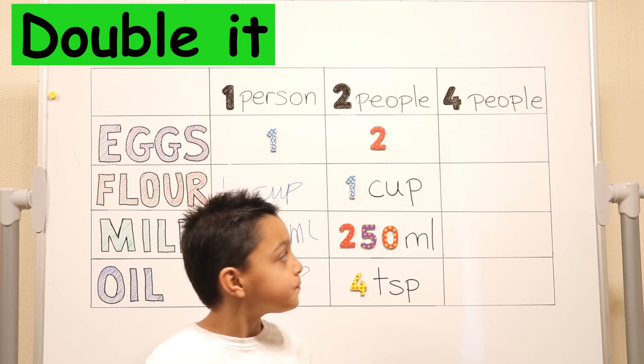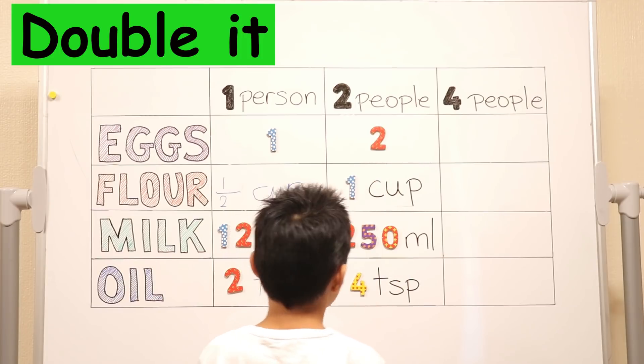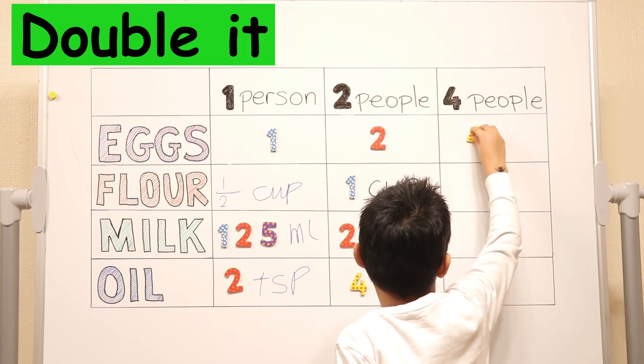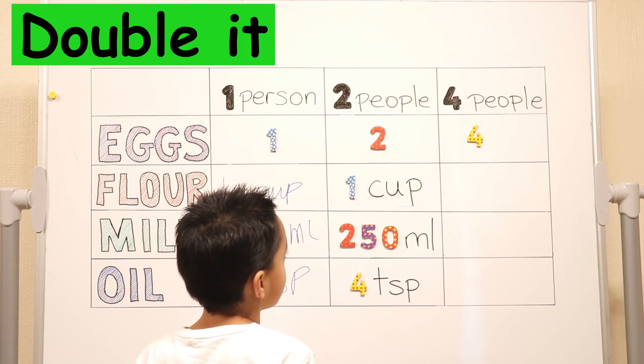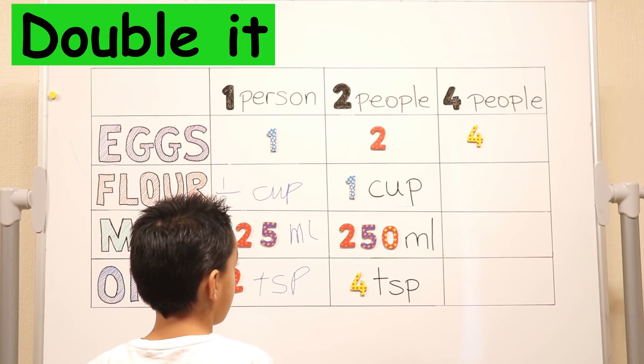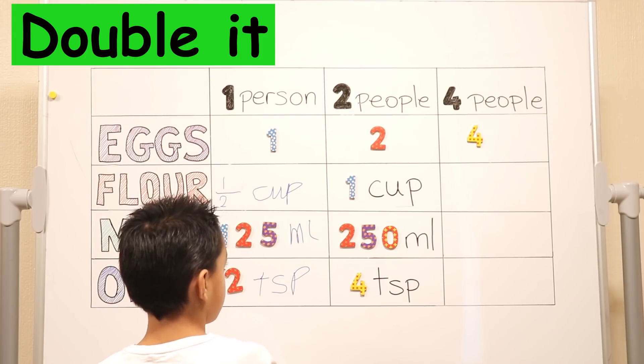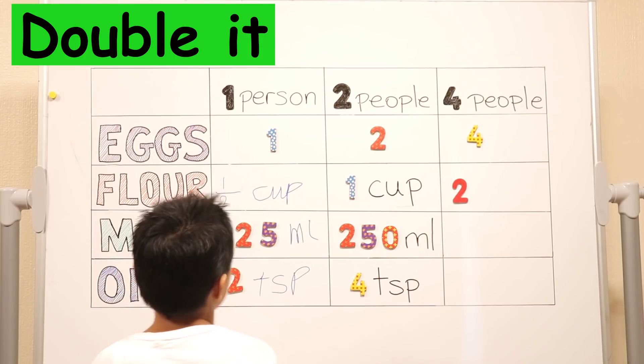So can you work it out and can you explain as you go along? So double two is four. Okay, so you're going to need four what? Remember we want to hear the ingredients. We're going to need four eggs. Yes. Two cups of flour.